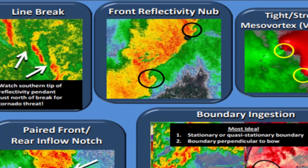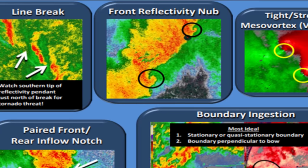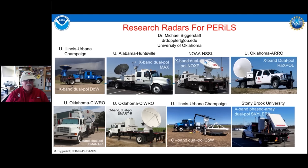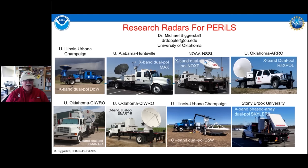You can sometimes even see hook echoes on the bowing line itself, and there are many others. There are also big research projects like PERILS, which is trying to understand why QLCS tornadoes form in the Deep South. And Reed Timmer has even put his own probes in front of some QLCS tornadoes — I highly recommend watching his video.